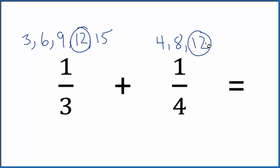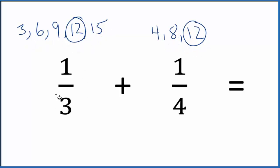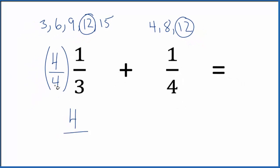So what we can do: if we multiply one-third by 1, it doesn't change anything. And 4 over 4—4 divided by 4—that's the same thing as 1. So we're going to multiply this by 4 over 4. 4 times 1, that's 4. 4 times 3, that's 12. So now we have 12 down here.